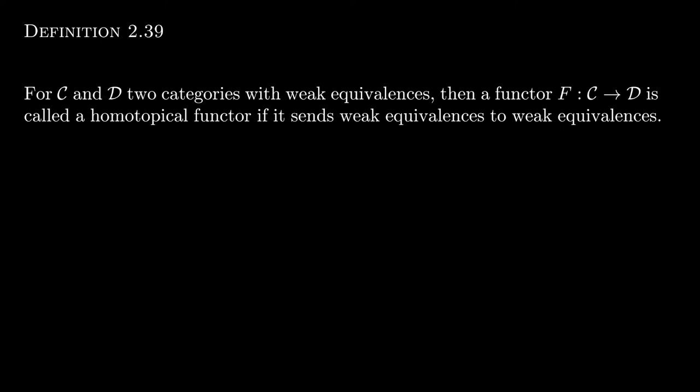Given two categories with weak equivalences, a functor between them that sends weak equivalences to weak equivalences is called a homotopical functor. In some sense it is preserving extra structure with regards to weak equivalences.